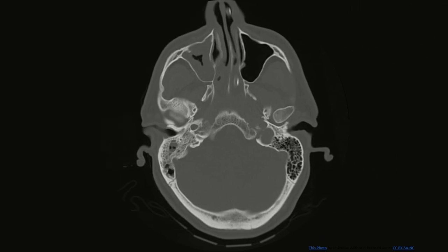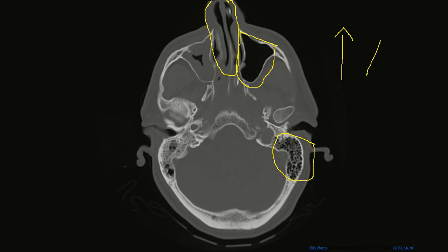Let's use this section to orient anterior and posterior. Can you see these black spaces at the back? Those are the mastoid air cells. Up here, these slits represent the nasal cavity, and this is the maxillary sinus. The direction facing the nasal cavity and maxillary sinus is anterior, and the direction facing the mastoid air cells is posterior — simple as that.